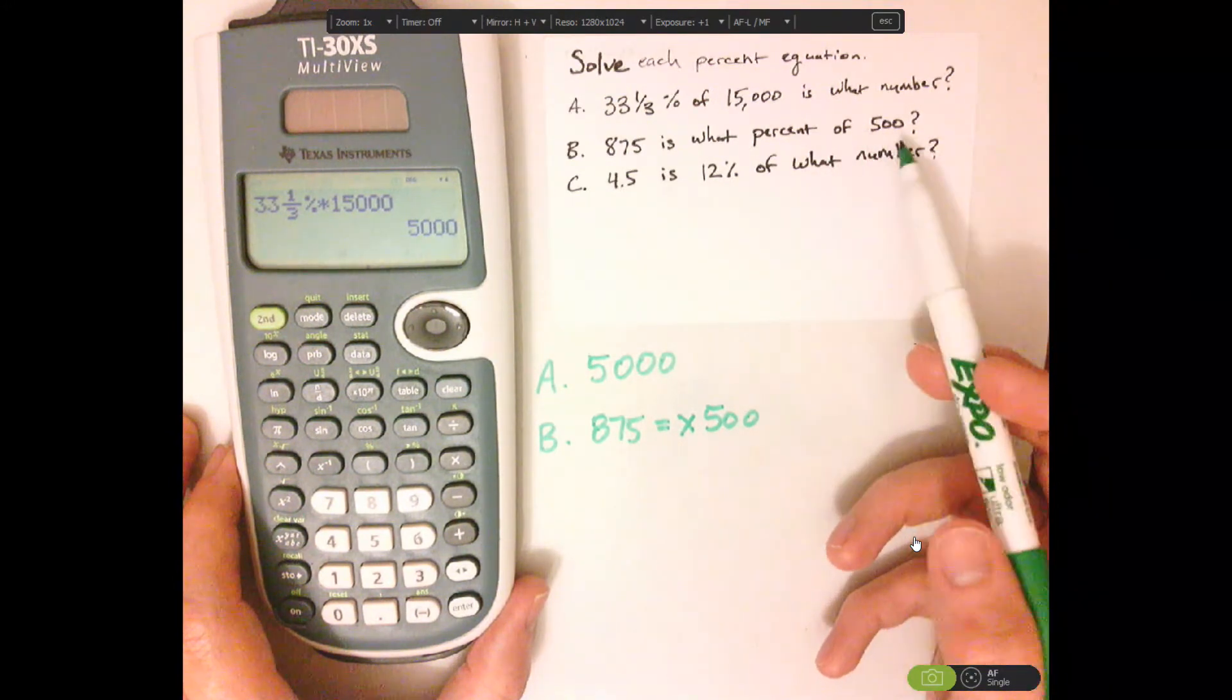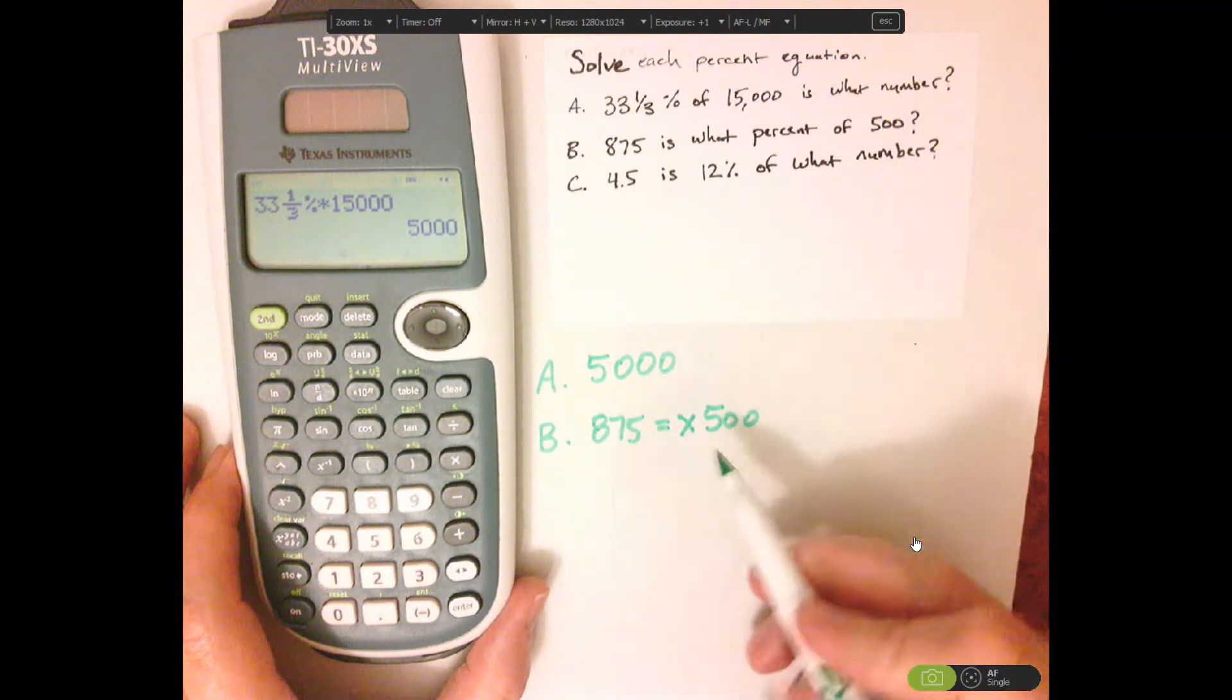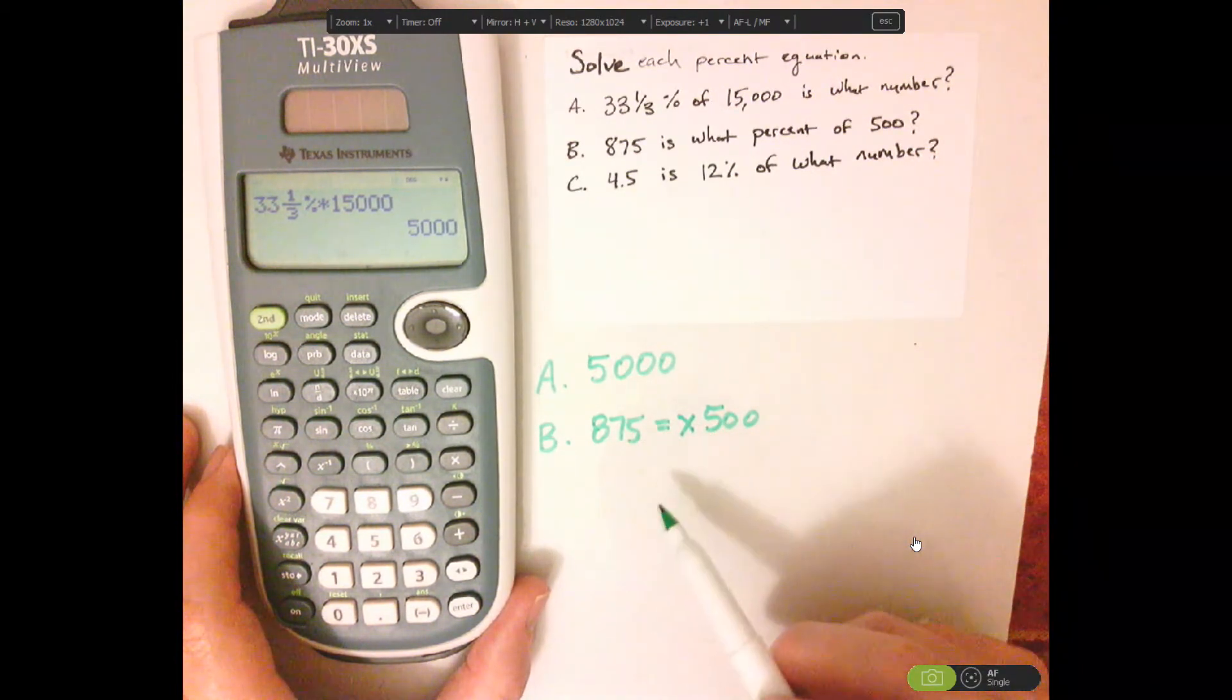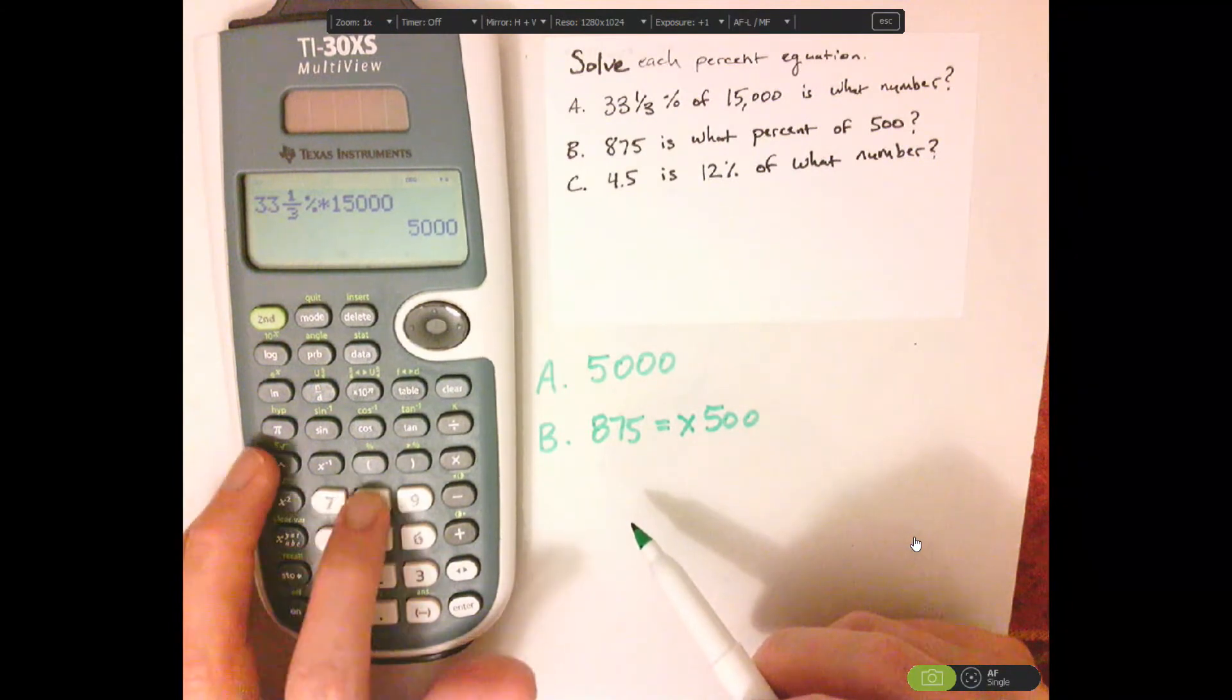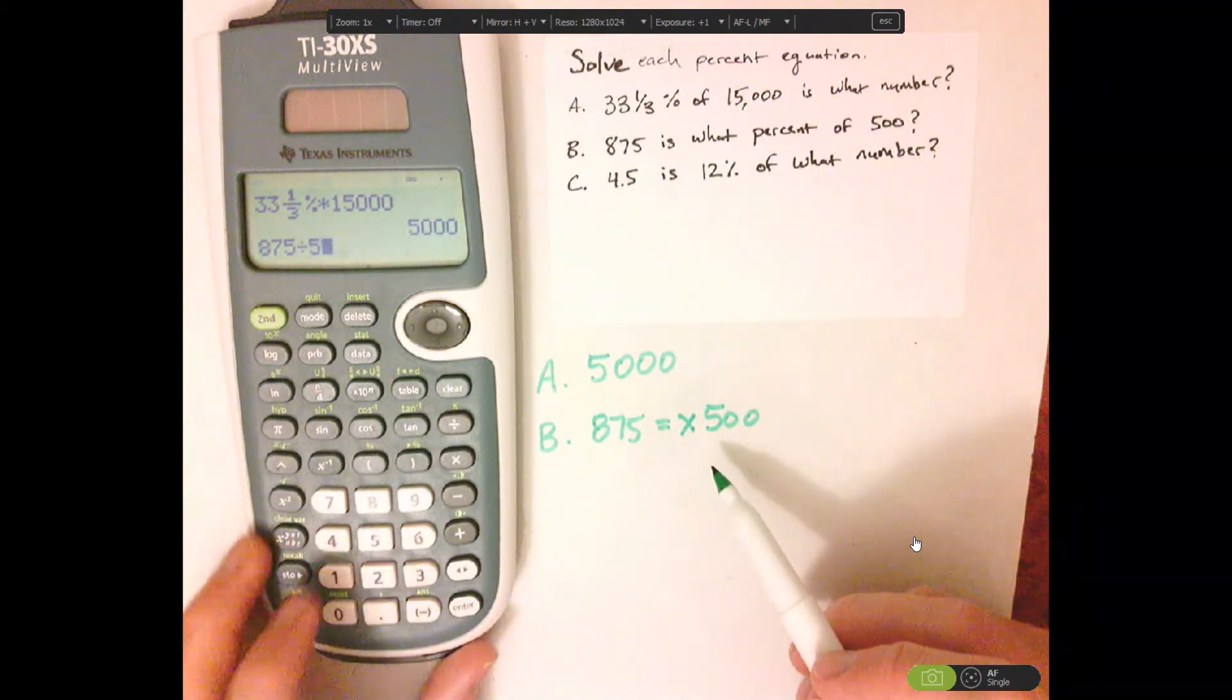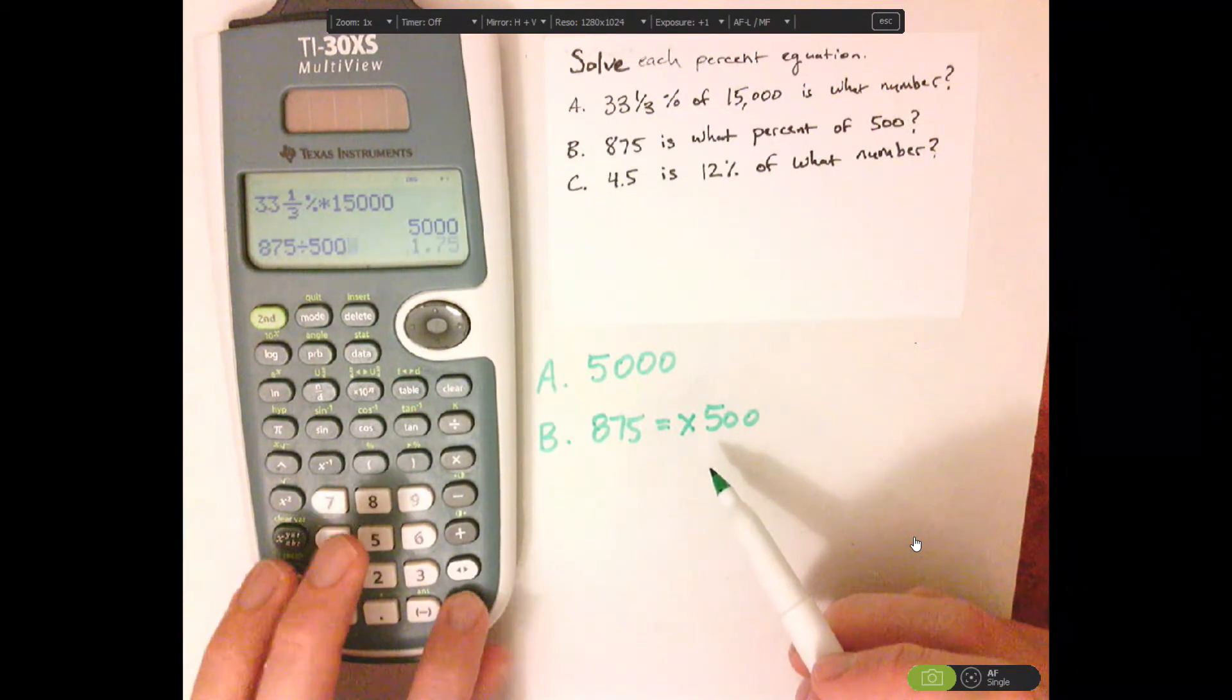'Of' means multiplication. All right, so here notice it's multiplication, so I'll be dividing it. So 875 divided by 500 equals,